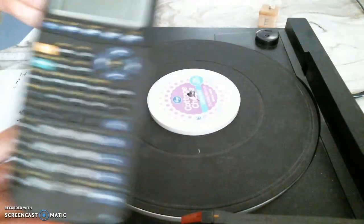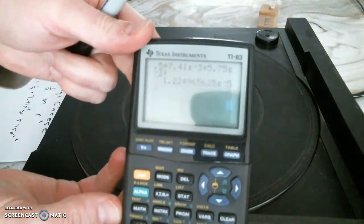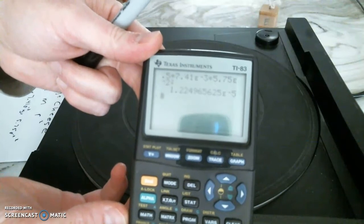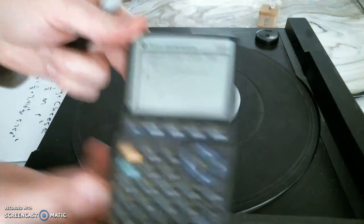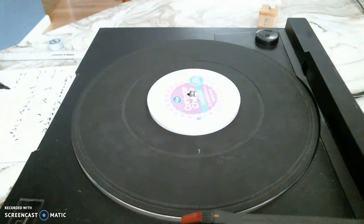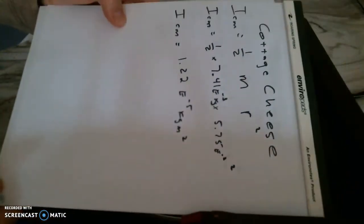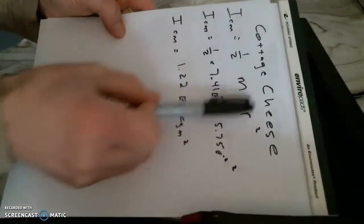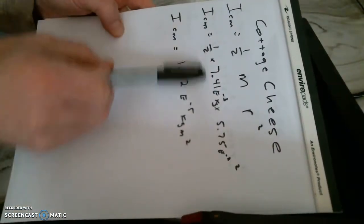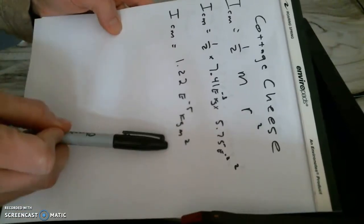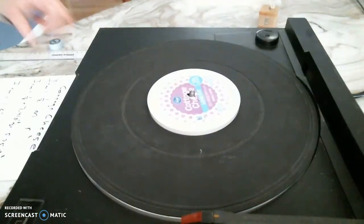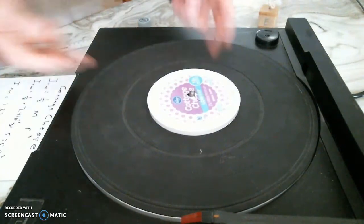That is the math I just typed in — you can pause and take a look. This comes out to 1.22 times 10 to the negative fifth kilogram meters squared. So that is the I about the center of mass for the cottage cheese lid using one-half MR squared: 1.22E-5 kg·m².